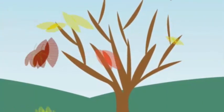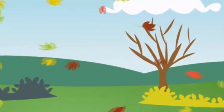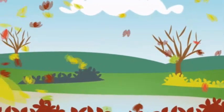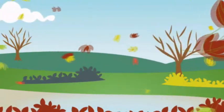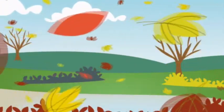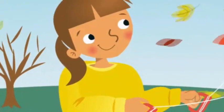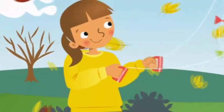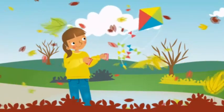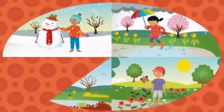It's autumn. What's the weather like? It's windy. Whoosh! Look at the trees. Look at the leaves. They're orange and green and yellow and brown. Can you see the girl? What's she wearing? She's wearing a jumper. What's she doing? She's flying a kite. What's your favorite season? Winter, spring, summer, or autumn?